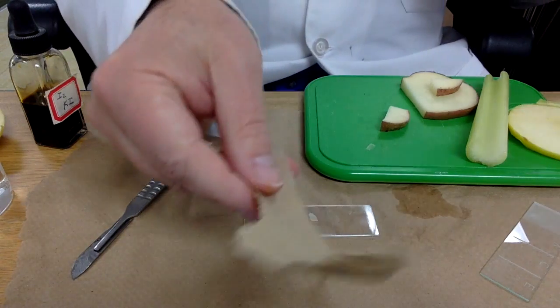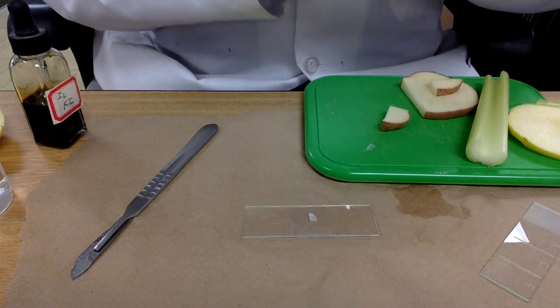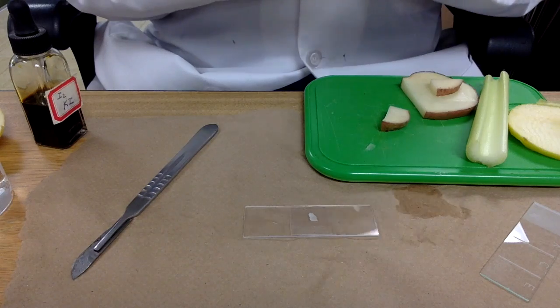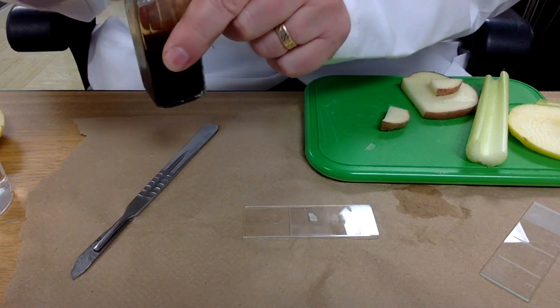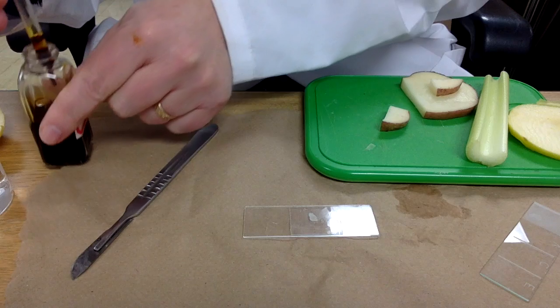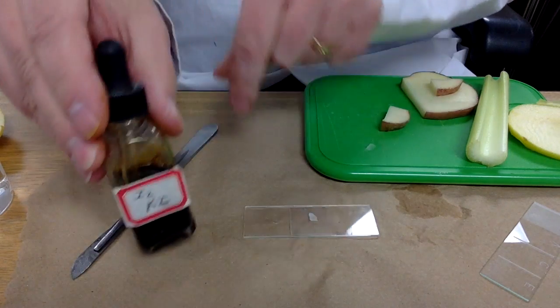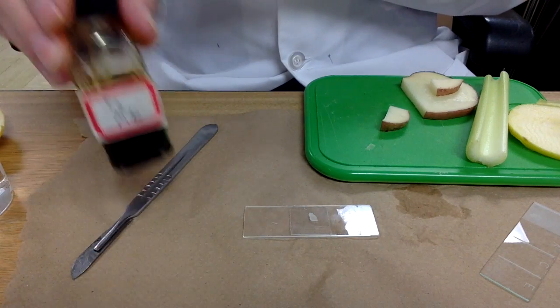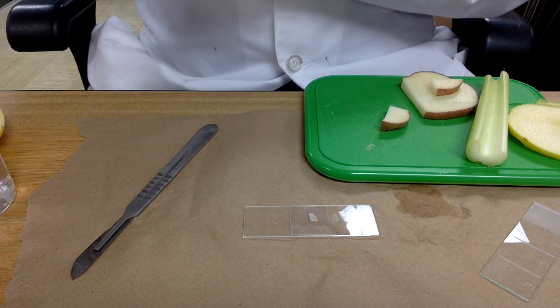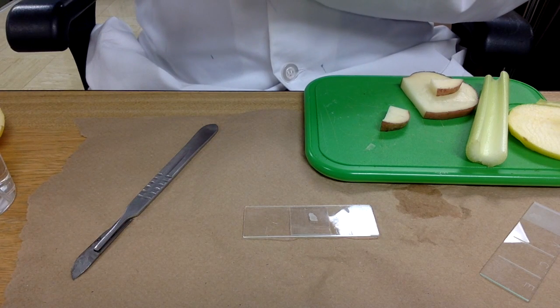This is kind of fun. You get yourself some paper towel. Take the eyedropper with Lugol's stain. You make sure you place that somewhere you're unlikely to spill it.